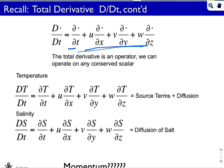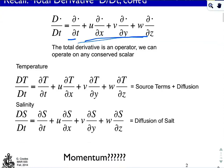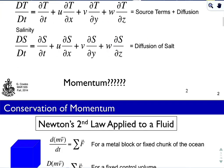But what about momentum? Well, momentum is a vector, but we can look at it in terms of three separate scalars in the three coordinate directions: x, y, and z. So we have u-momentum in the x-direction, v-momentum in the y-direction, and w-momentum in the z-direction.